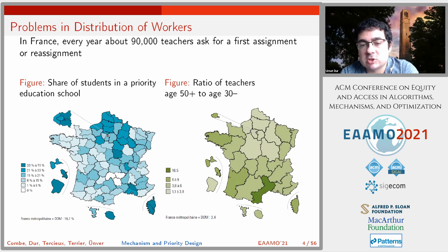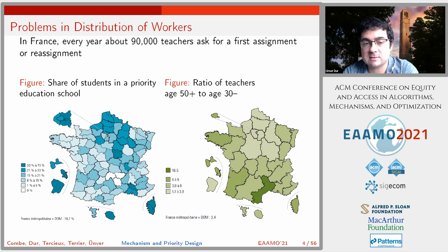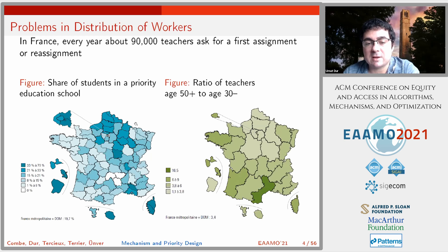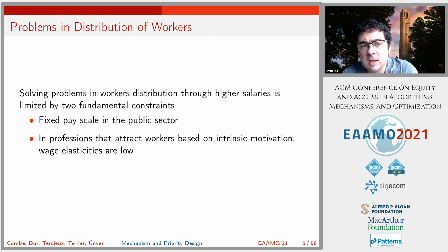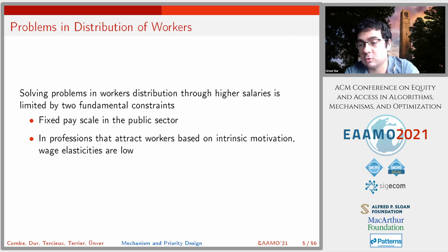Here is a map showing the negative correlation between the share of students in disadvantaged schools and the ratio of experienced to inexperienced teachers. This picture is from France, where every year about 90,000 teachers are asked for their first position or are reassigned. Where we have more disadvantaged students from lower socioeconomic families, we have fewer experienced teachers — a problem policymakers would like to solve. One possible solution is salary incentives: increasing salaries at disadvantaged schools to motivate teachers to work there.